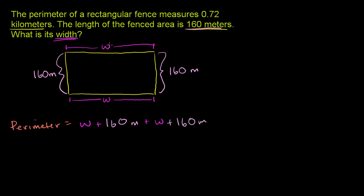And let's assume w is in meters. So if you were to add all of these up, you have a w plus a w. So it would be 2w plus 160 plus 160 is 320. So that's plus 320. And this whole thing is in meters. We're assuming that w is in meters.